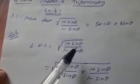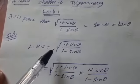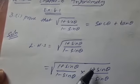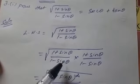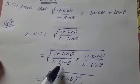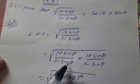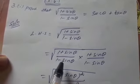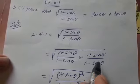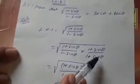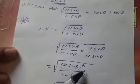So, we take the square root of (1 plus sin theta) divided by (1 minus sin theta). The denominator's conjugate — conjugate means minus becomes plus — so we multiply by (1 plus sin theta) divided by (1 plus sin theta). So, (1 plus sin theta) into (1 plus sin theta) gives (1 plus sin theta) squared.